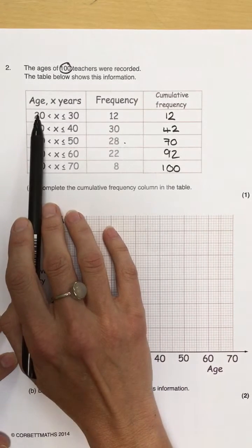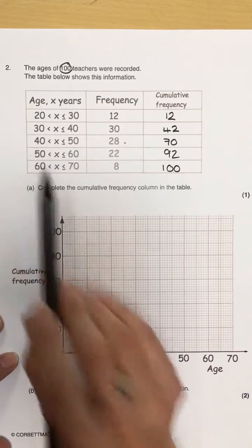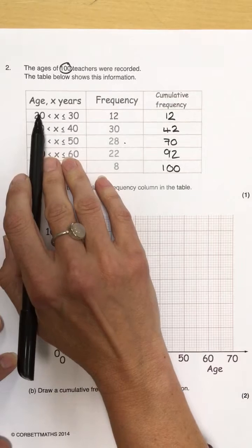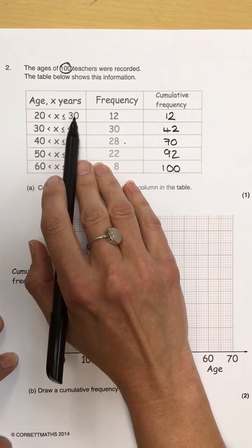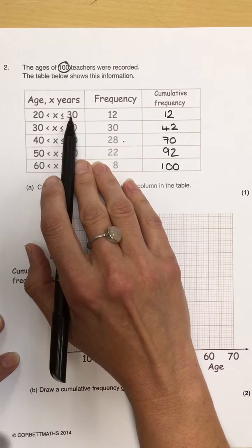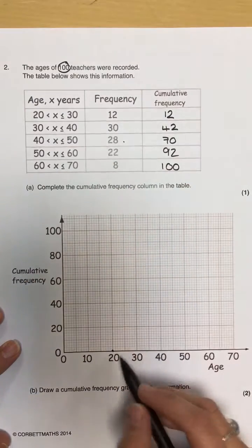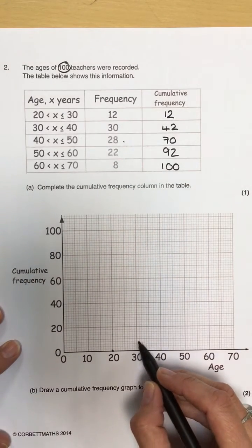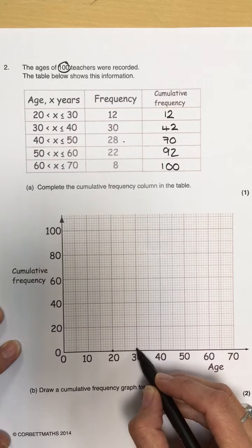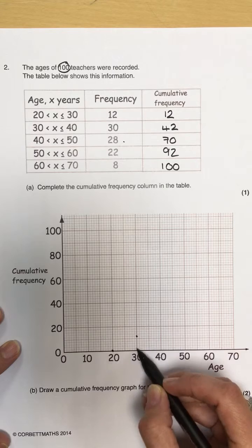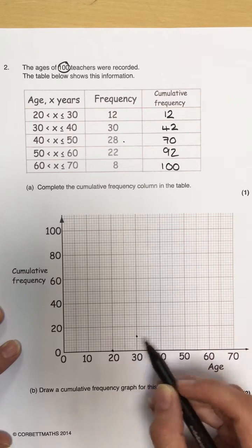So, the graph starts at 20, and at 20, there are no values, because that's where the graph starts. When it gets to 30 in the first row of the table, the cumulative frequency is 12. So, when it gets to 30, we now need to find 12. Now, these are going to be 2's, so I need to find 12, which is 6 little squares up.